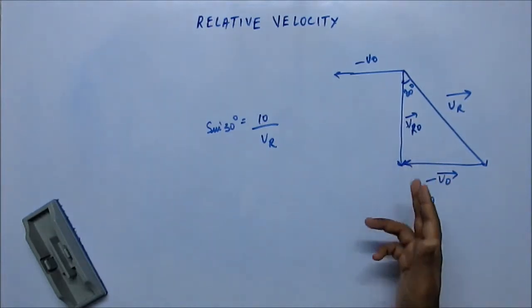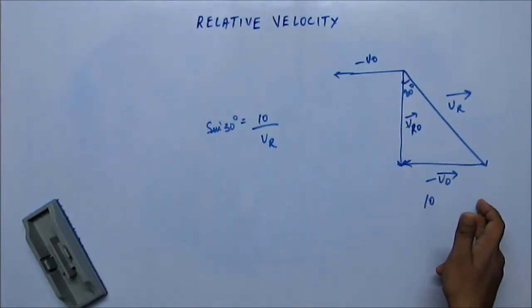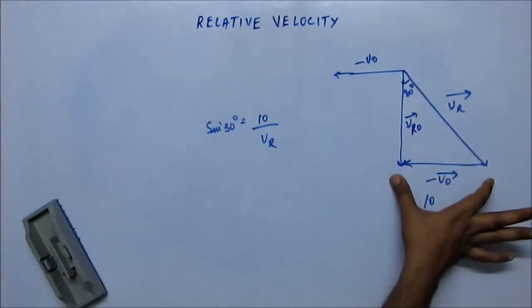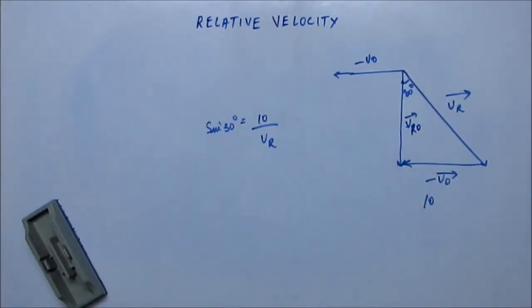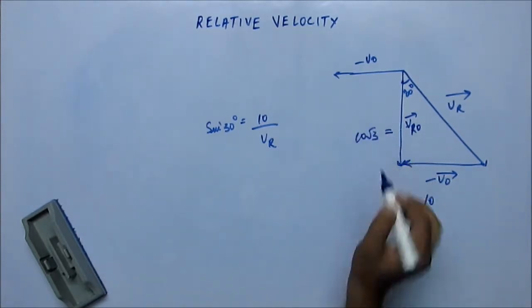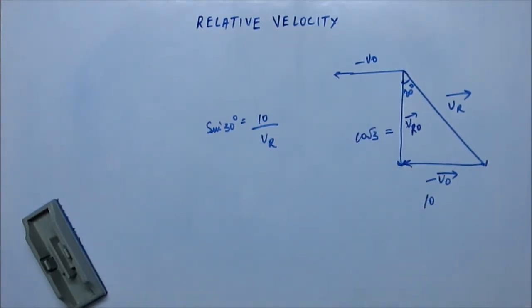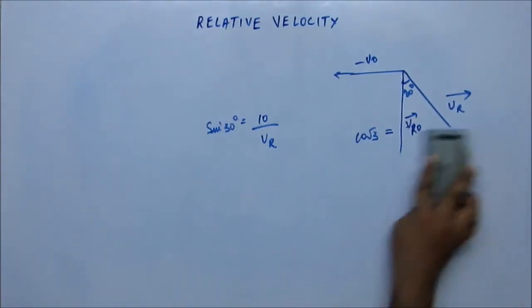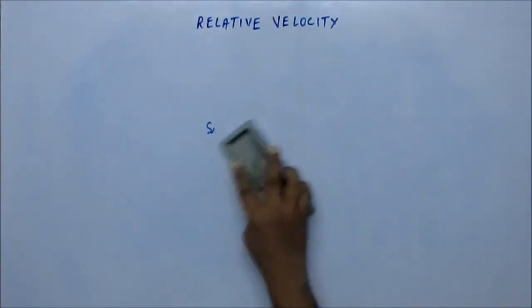We have to use tan 30 degrees equals perpendicular upon base. Using that you can find VRO as 10 root 3. This is, as you can see, just simple application of vector algebra that we have studied before.